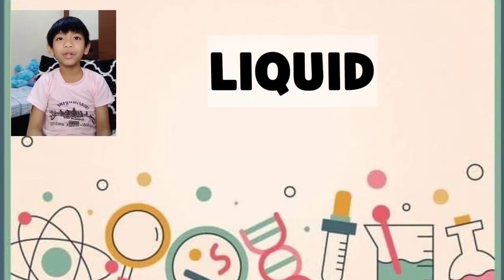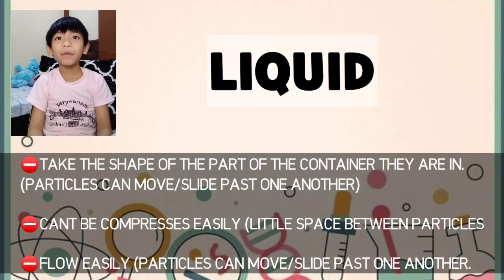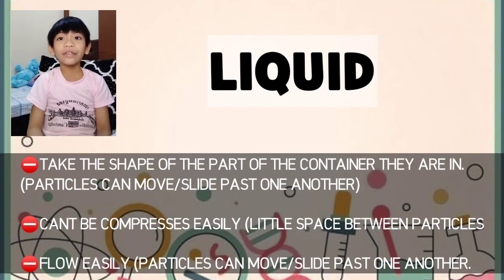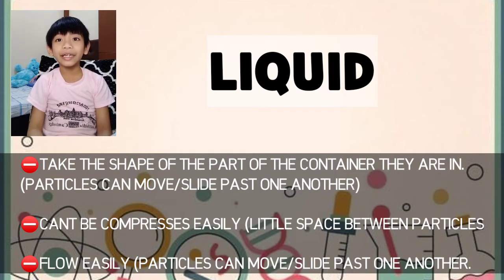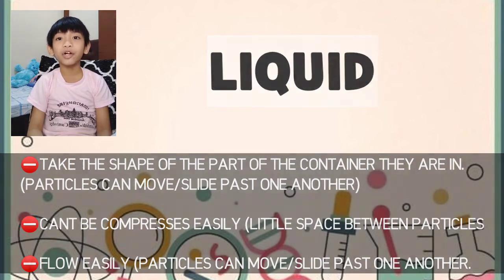The second example is liquid. Liquid takes the shape of the part of the container it is in. Particles can move slightly past one another. Little space between particles. Flows easily.